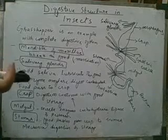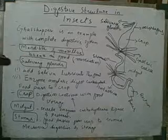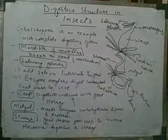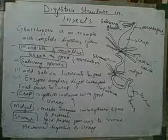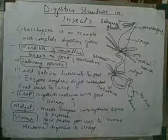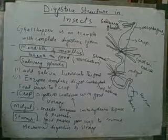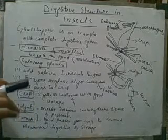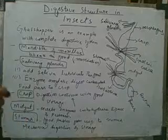These are the parts of the digestive system. We will study the parts. The mouth region is called the foregut. The first region is called the foregut.